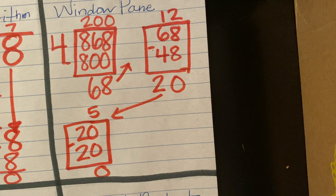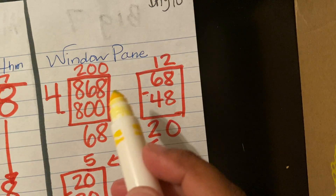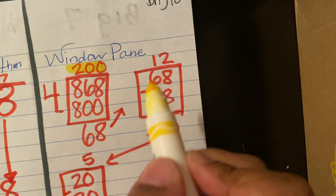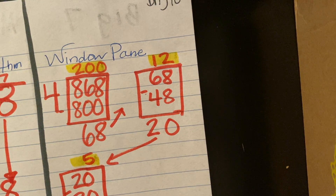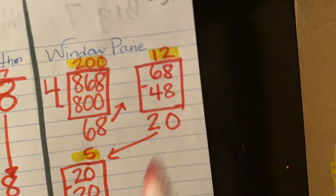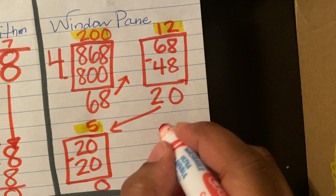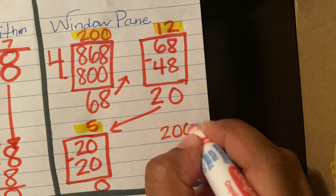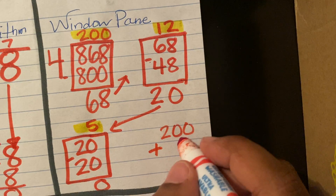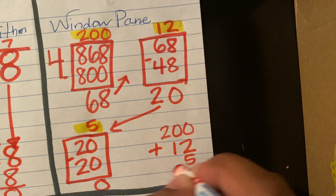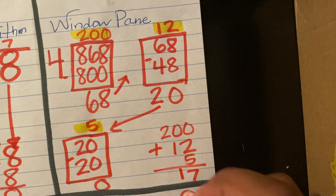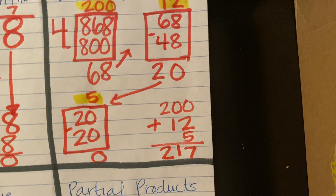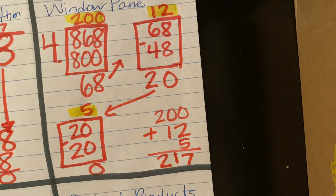To get my quotient, I need to add all of the answers on top of my boxes: 200 plus 12 plus five. I know that five and two is seven, ten by itself is ten, and 200 by itself is two hundred. My answer is 217.